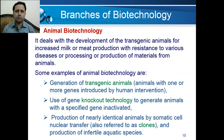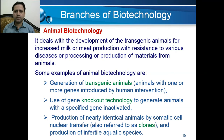What are the branches of biotechnology? There are numerous branches of biotechnology. One branch is animal biotechnology, in which we deal with the development of transgenic animals for increased milk or meat production, with resistance to various diseases, or for the processing and production of materials from animals.